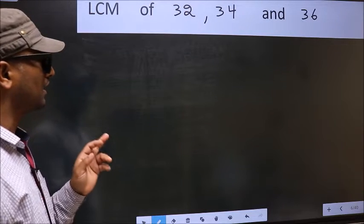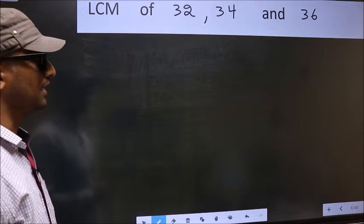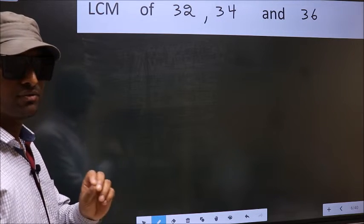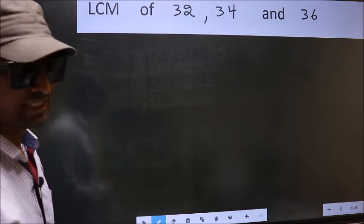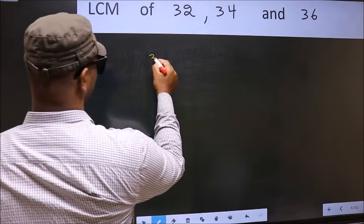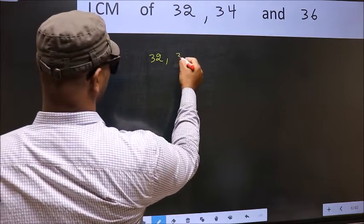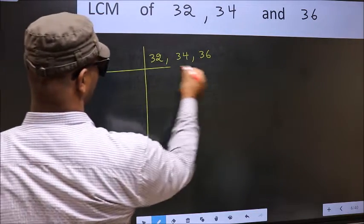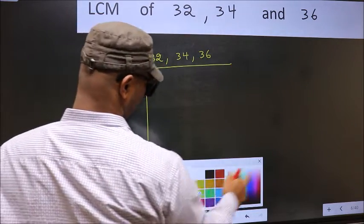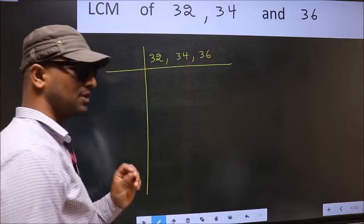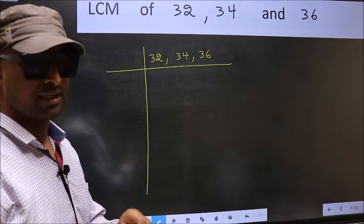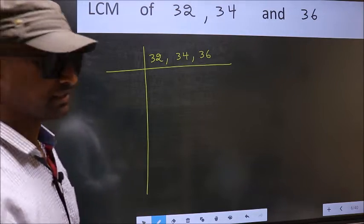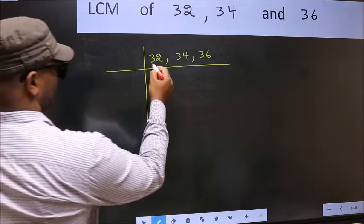LCM of 32, 34 and 36. To find the LCM, first we should frame it in this way: 32, 34, 36. This is your step 1. Now you should focus on the first number, which is 32 here.